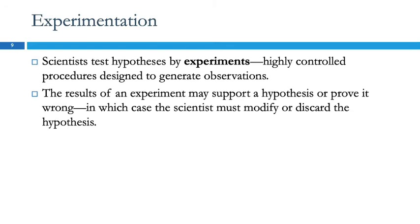We test our hypotheses by experiments, and experiments are most useful when they're highly controlled. Burning wood in a fireplace is not a controlled experiment because all the gases produced go away. In Lavoisier's controlled environment with his container, they were all trapped and he could see what they weighed. The results of an experiment may support your hypothesis or prove it wrong — and that's the more common outcome. Scientists spend their whole careers having ideas and proving themselves wrong, but every once in a while you get something right, and that makes up for all the rest.